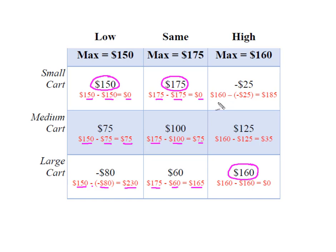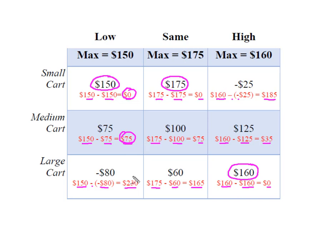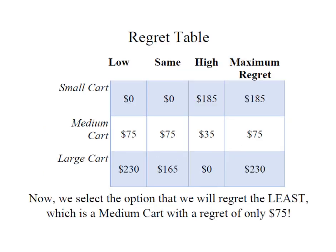For high tourist traffic: I take the maximum of $160 and subtract negative $25, which gives me a regret of $185. My maximum of $160 minus my payoff of $125 gives me a regret of $35. And the maximum minus the maximum payoff gives me a regret of $0. Now I'm simply going to move these regrets into a new table — the regret table contains those figures I just calculated.